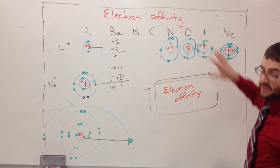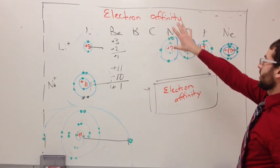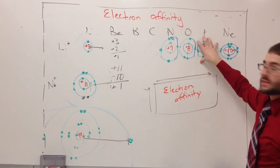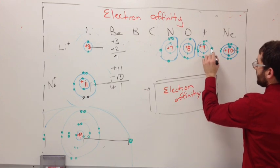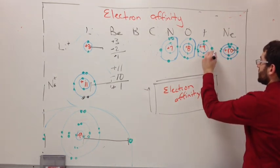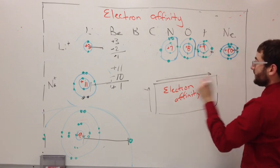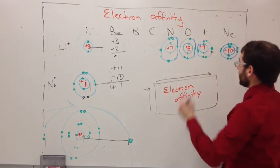All right the next thing we have is with the same trend, electron affinity. This has seven in its outermost energy level. One, two, three, four, five, six, and then seven. If it gains one it has eight so it wants to do that.